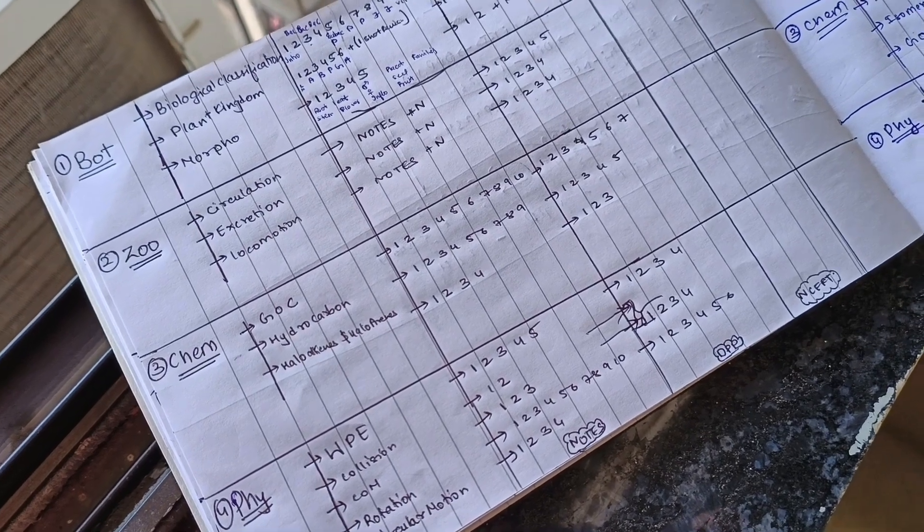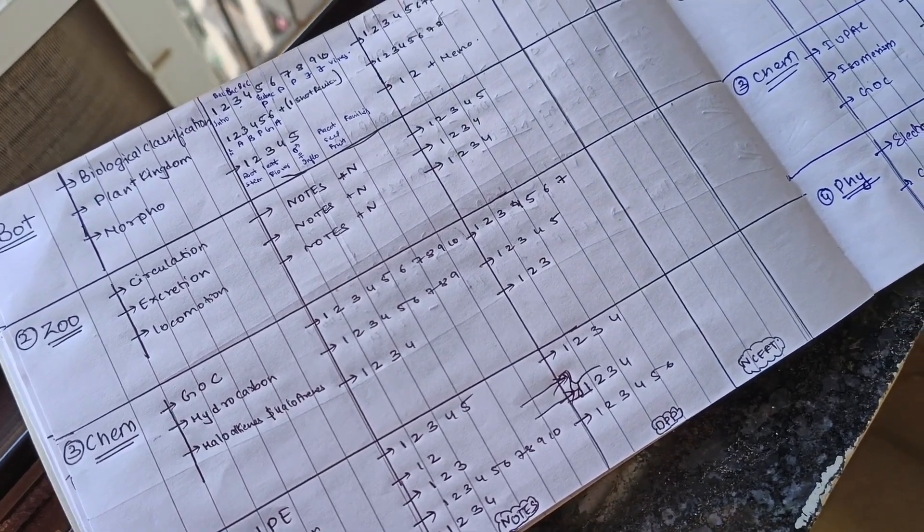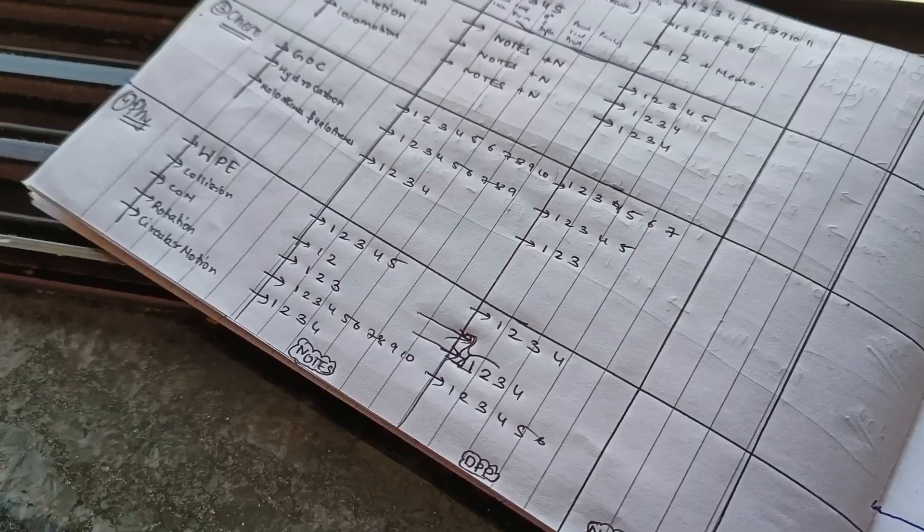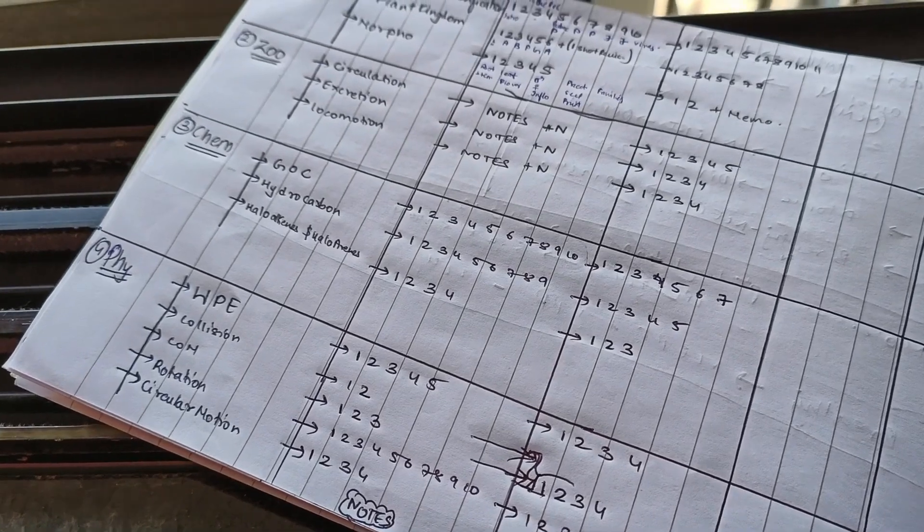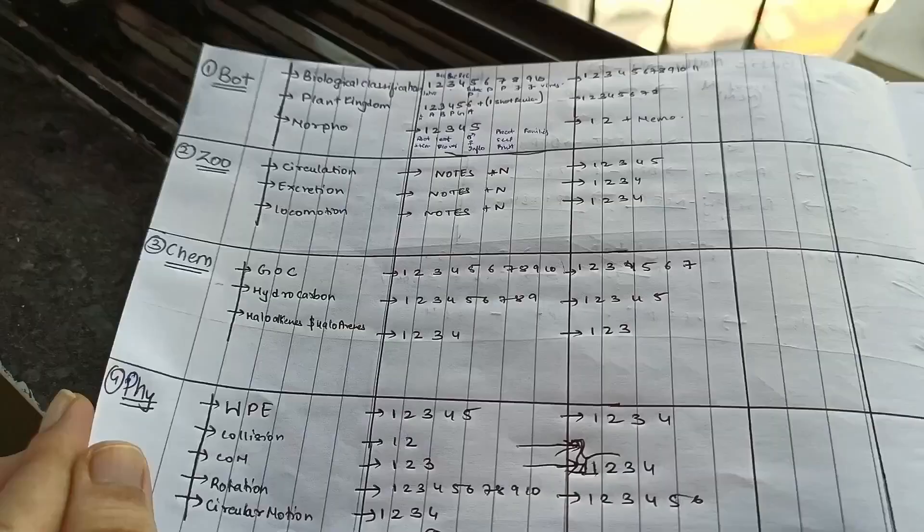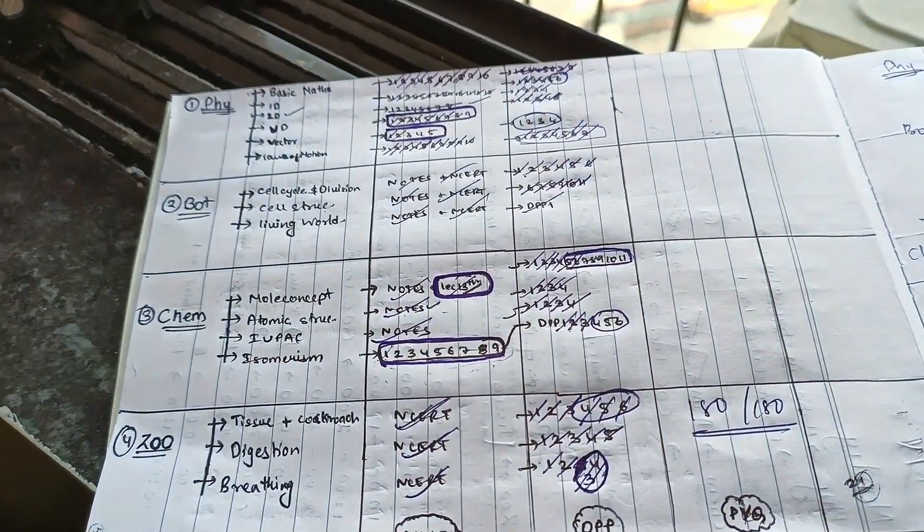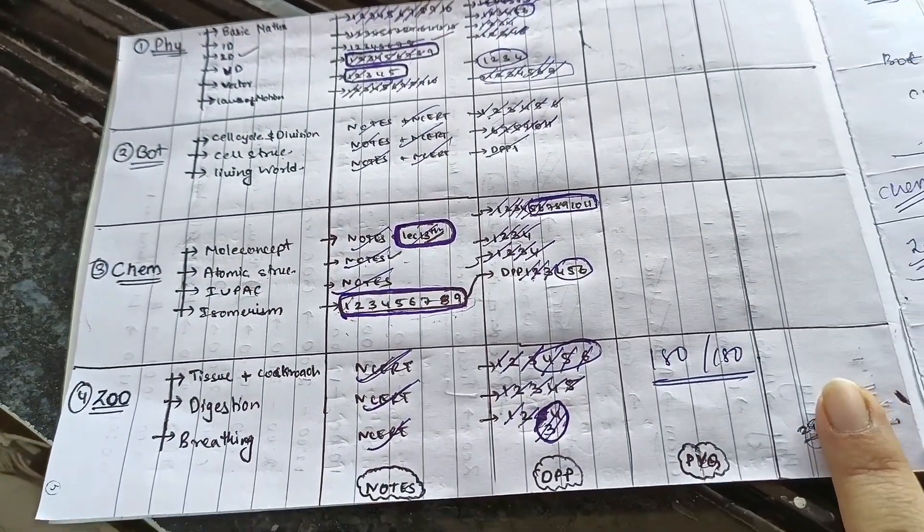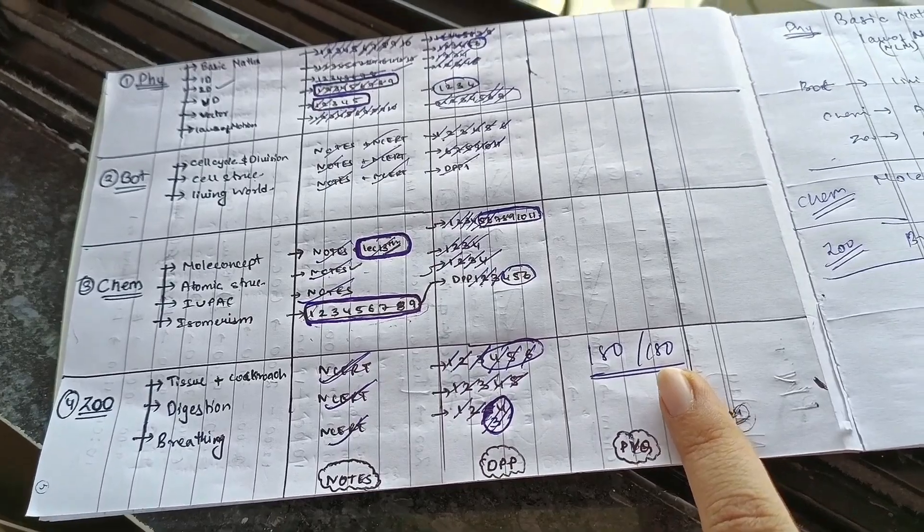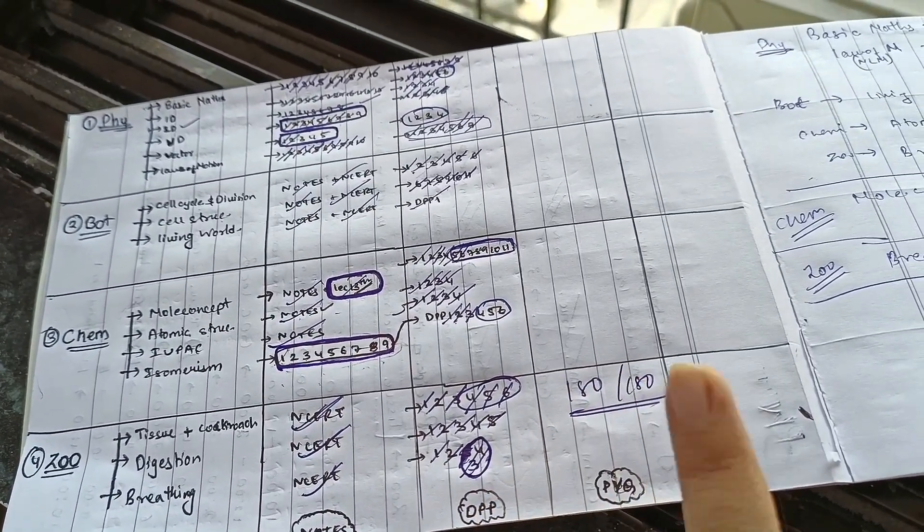Hi everyone, welcome to Blissful Study. From today I'm going to start my PW AITS 2 test preparation. This is the planner for the test. I made this for the first test as well, but I felt it was incomplete, so I made it again like this.